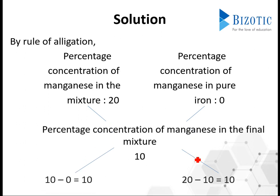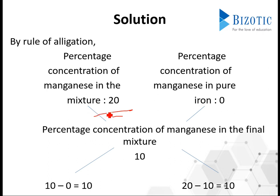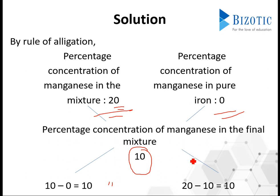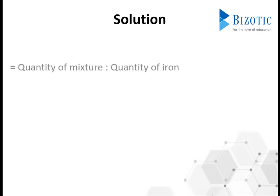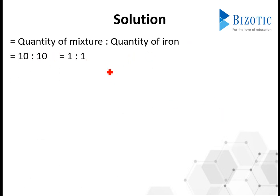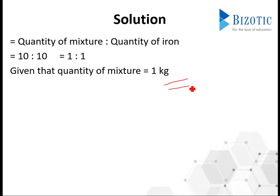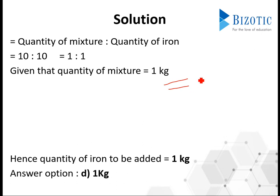So the percentage concentration of manganese in the mixture is 20. The iron concentration is 0 — since pure iron has no manganese. The required final concentration of manganese is 10. Now, 10 minus 0 equals 10, and 20 minus 10 equals 10 — ratios must always be greater minus smaller to stay positive. So both cases give 10, making the ratio 10:10, which is 1:1. So one part of manganese mixture will have one part of iron, giving the required answer of 1 kg.